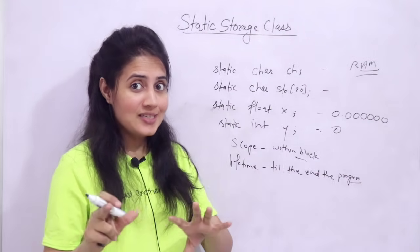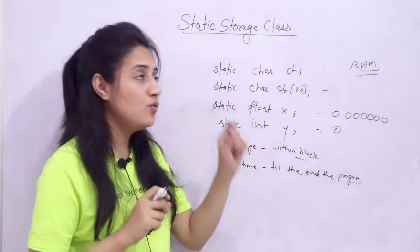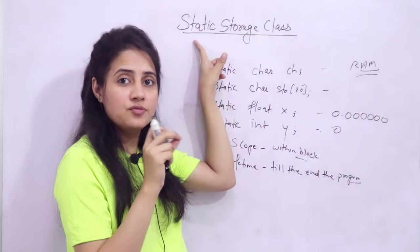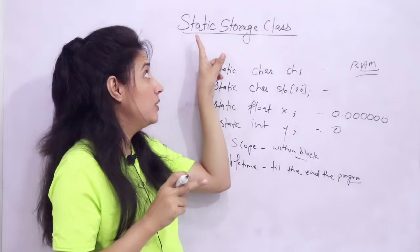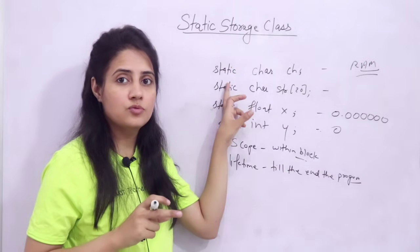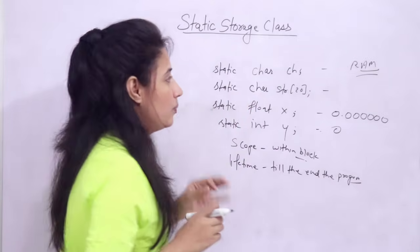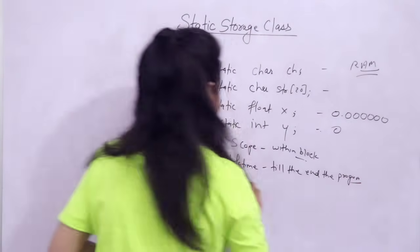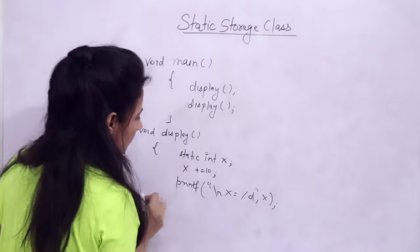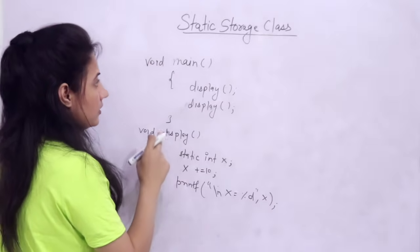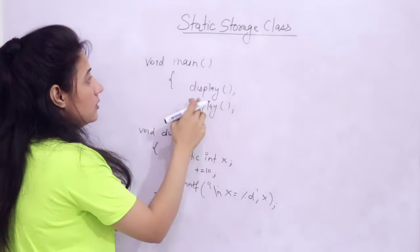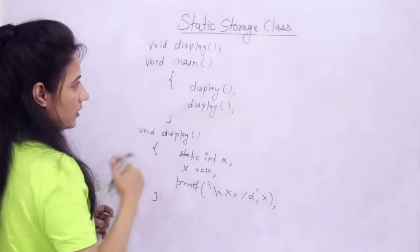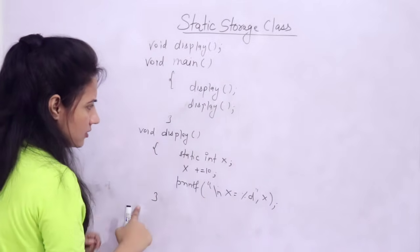Let me take one example to make this clear. Out of these four storage classes, static is the most important — almost 95% of questions in competitive exams like GATE come from the static storage class. So please concentrate. I'm going to demonstrate a program line by line. I'm taking a simple function called 'display'. This is its definition, and here in main I'm calling this function. Before that, I write the prototype: 'void display'.